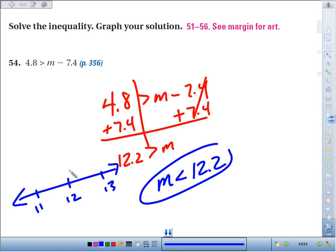Here's 11, 12, 13. 12.2 is right about there. We'd have an open circle because it's just less than, not equal to less than. Numbers less than are to the left.